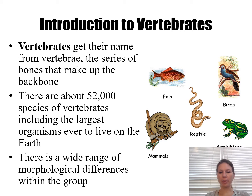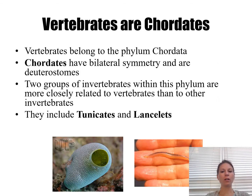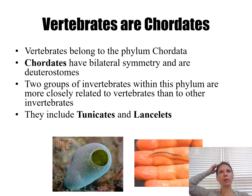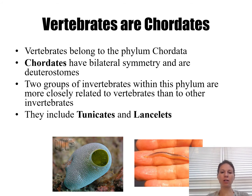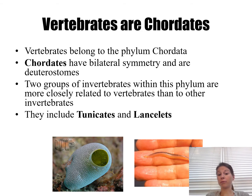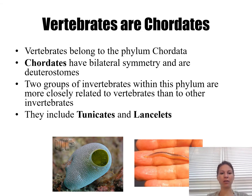All vertebrates have a backbone — it includes fish, mammals, reptiles, amphibians, and birds. Vertebrates are part of a phylum called Chordata, meaning we are chordates. All chordates have bilateral symmetry. If you remember from the invertebrate phylogeny, the next closest relative would have been echinoderms. Chordates have bilateral symmetry, which means cephalization — a head region — and they are deuterostomes, meaning the anus forms first.